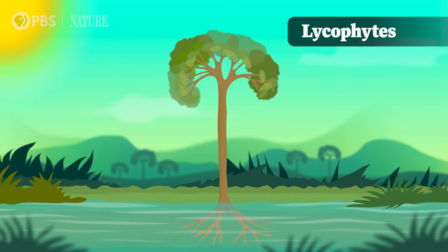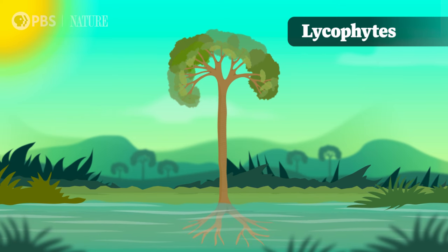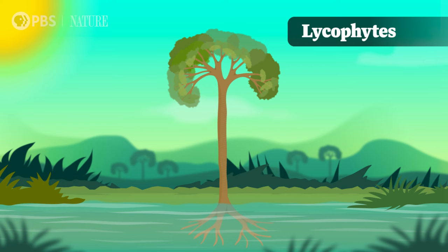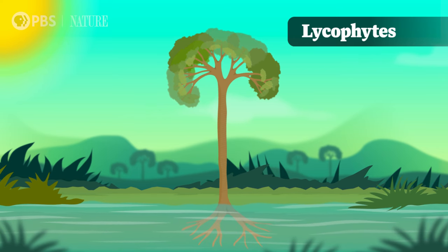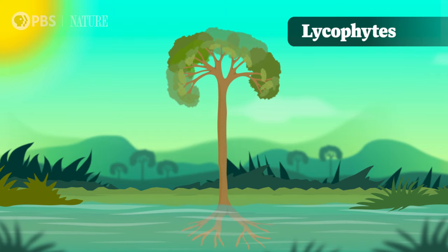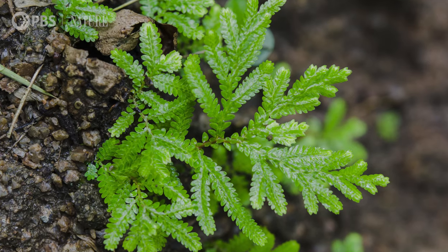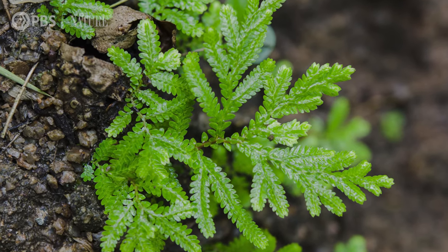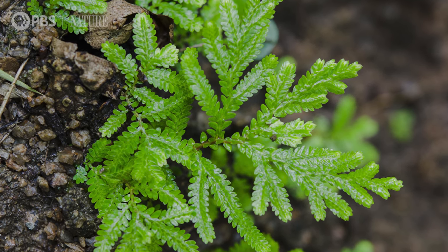Although many early seedless vascular plants have gone extinct, you can still find some growing today. Lycophytes were huge 300 million years ago — literally tree-sized. Their fossils tell us about the first forests on the planet and the earliest root systems. Today, some have names like club moss and spike moss, but don't be fooled by the misnomers — they're not true mosses, because they have roots, stems, and leaves.